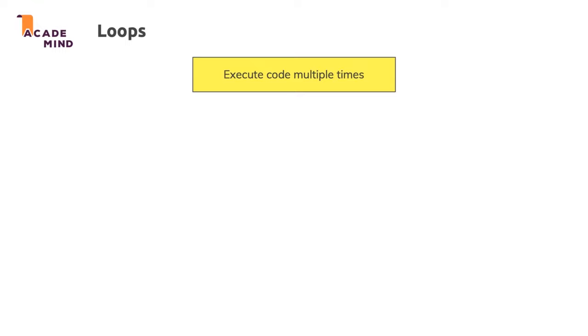But if you want to control that a certain snippet of code runs for every item you have in an array or runs 10 times, then you would have to put 10 function executions into your code. And loops allow you to write such code repetition in a more dynamic and flexible way.